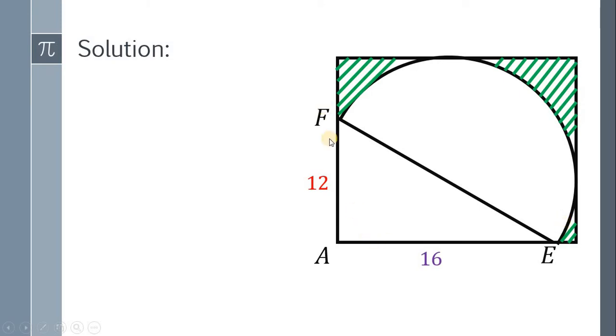Finding the area of this triangle is very easy since the base and the height are already given. Our problem now is how do we find the area of this semicircle. To do that, we need to find first the length of EF.